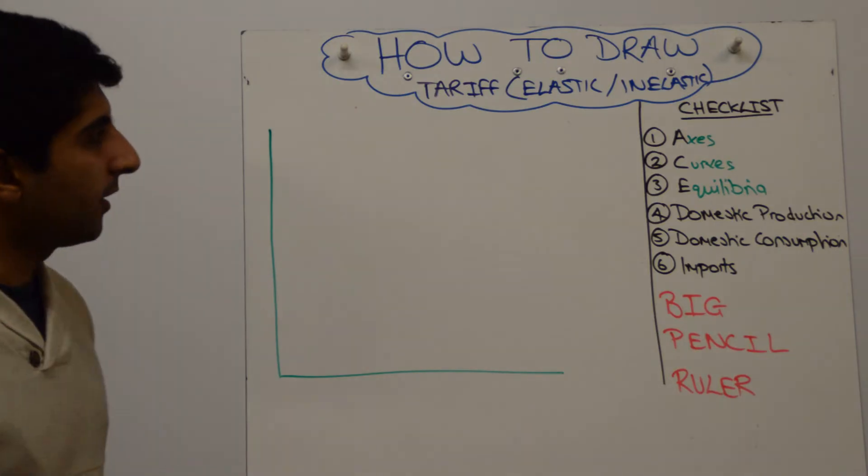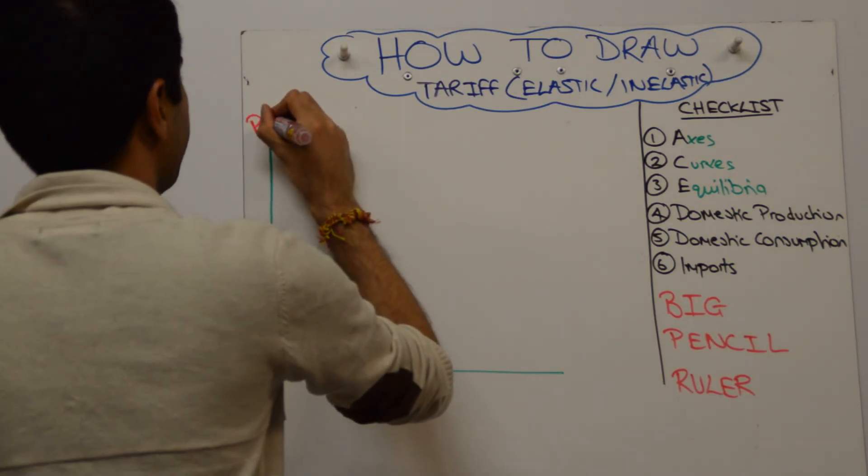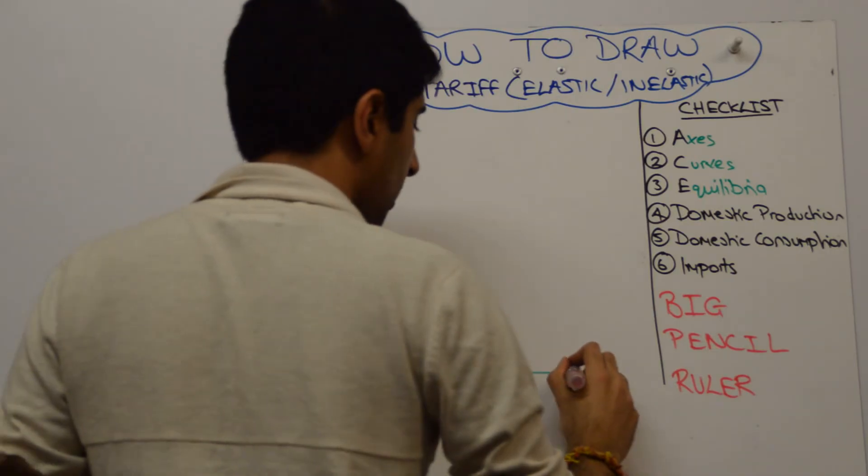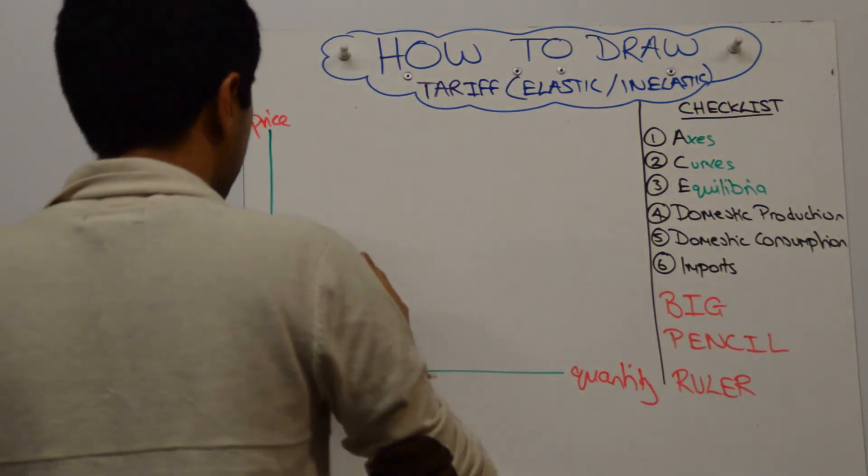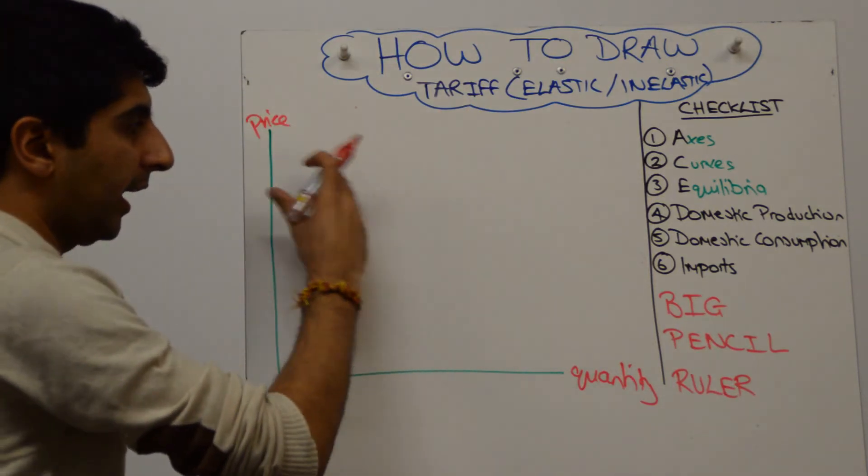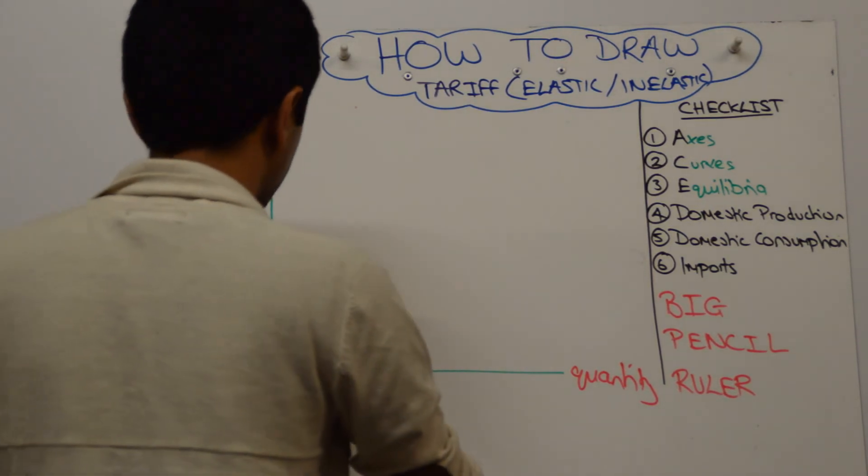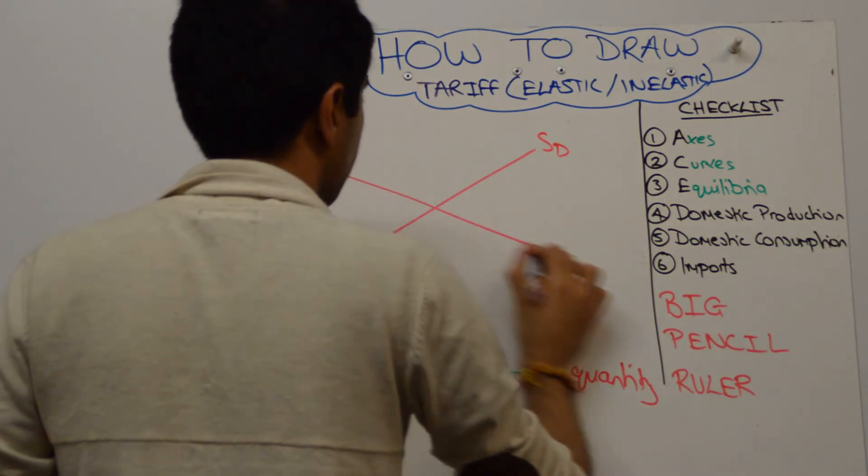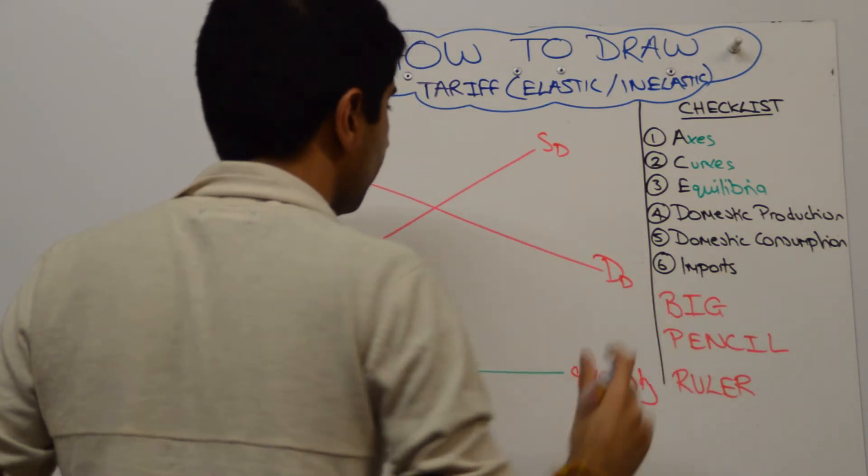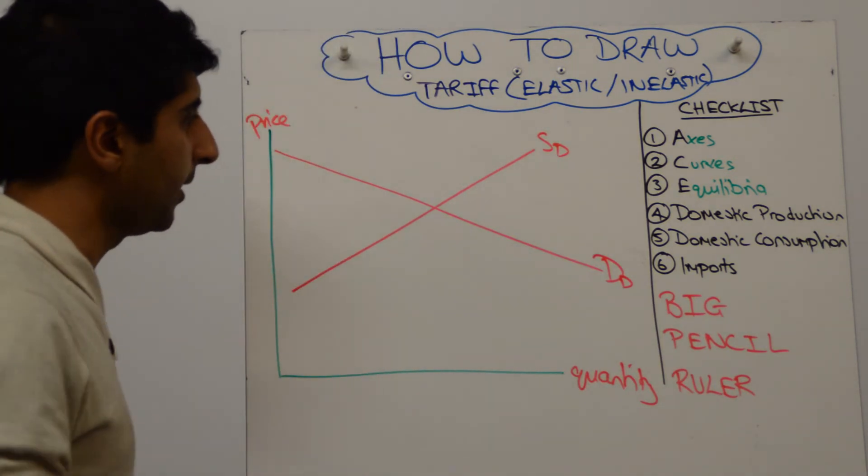Okay, so let's get constructed. We'll have price on the y-axis as usual, and quantity on the x-axis. Now we're going to draw our domestic supply and domestic demand quite shallow. All right, so let's call that supply domestic and demand domestic. So quite shallow looking, not very steep here.